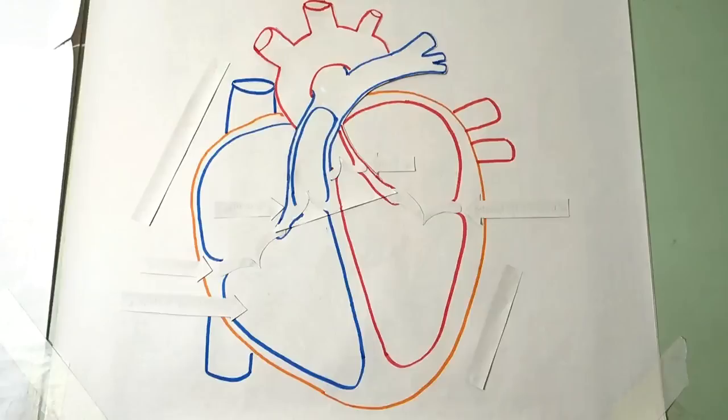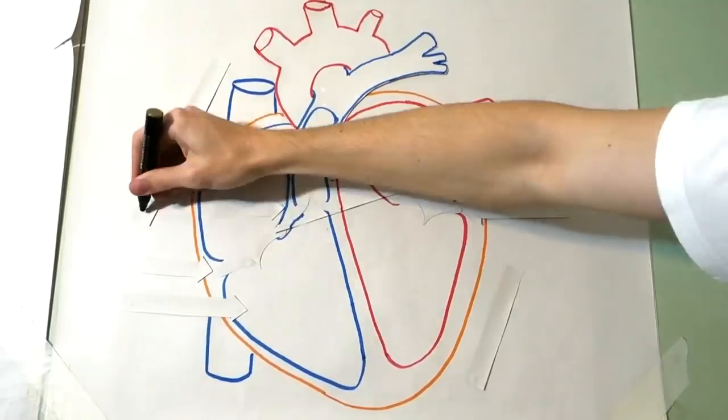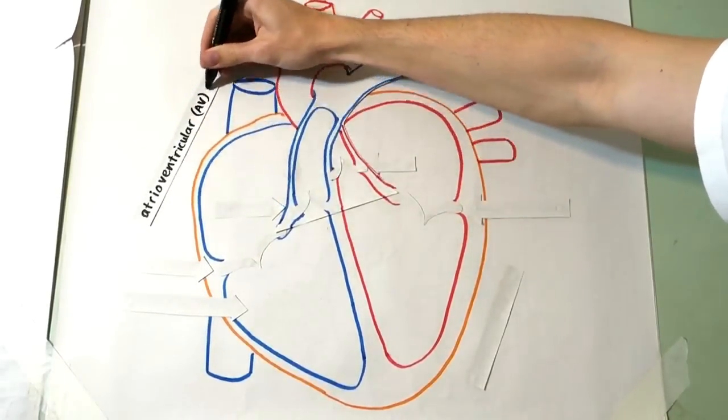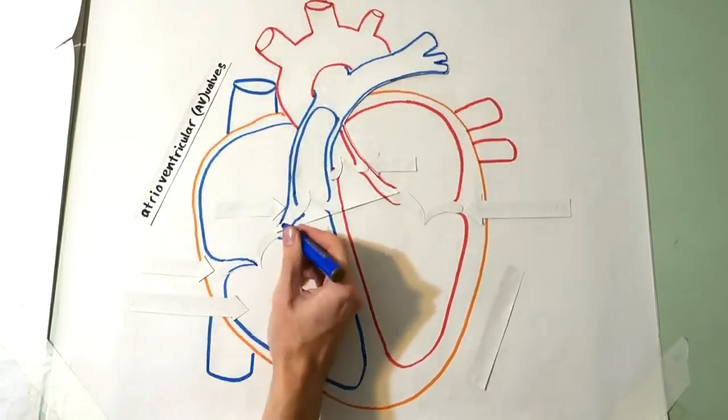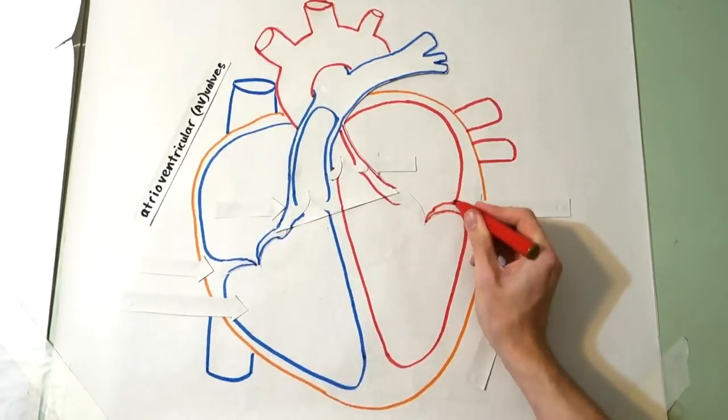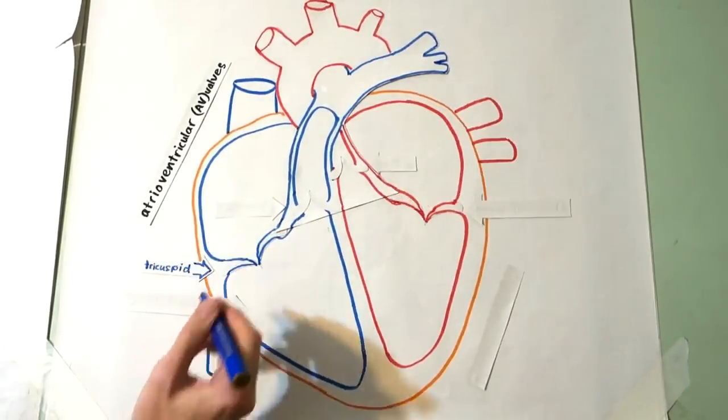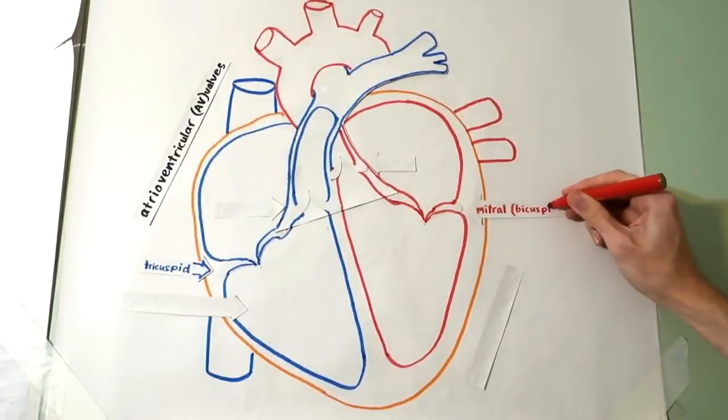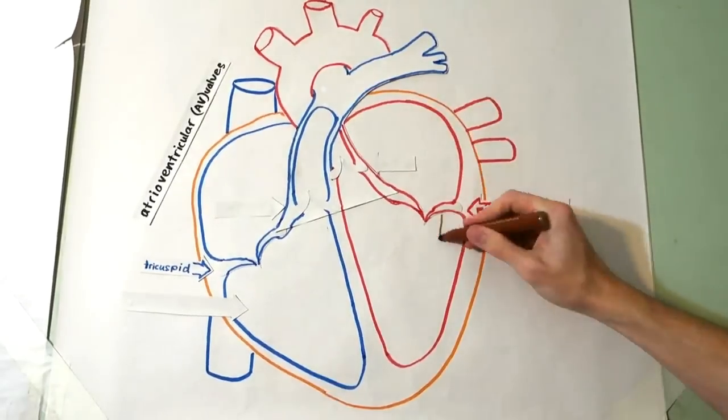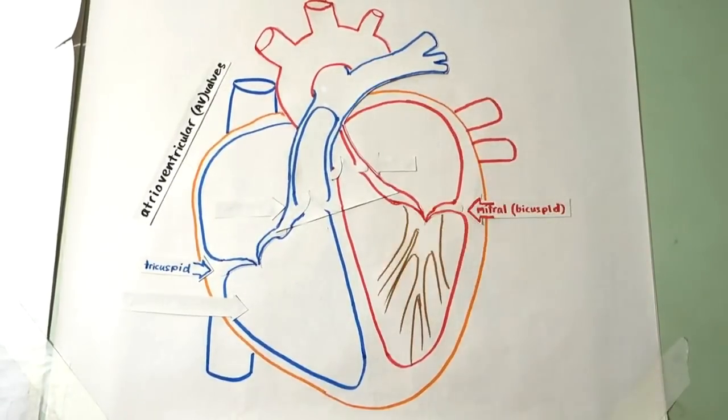The valves of the heart. The atria pass blood into the ventricles via one-way passages called valves. These valves prevent the backflow of blood. There are two types of valves. There are atrioventricular valves, AV valves, which allow blood to flow from the atria into the ventricles. These include the tricuspid valve on the right side of the heart and the mitral valve, or bicuspid valve, on the left side of the heart. The AV valves are attached to the ventricles by cord-like tendons called chordae tendinae.